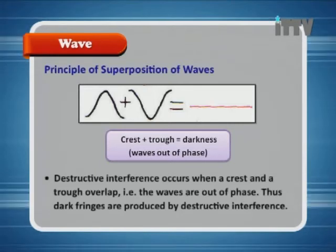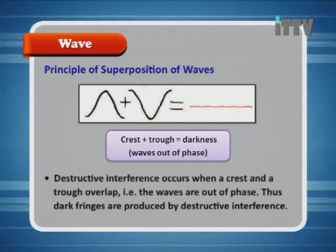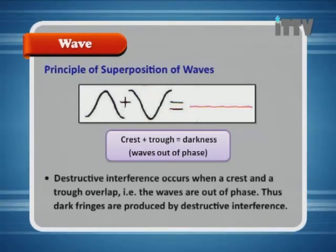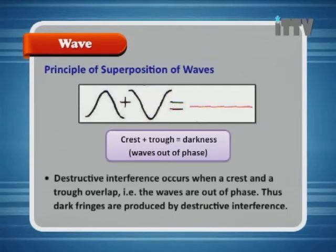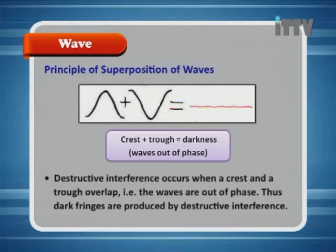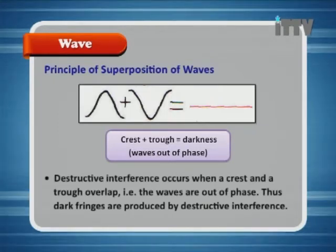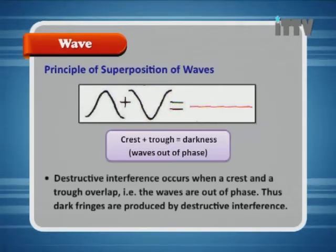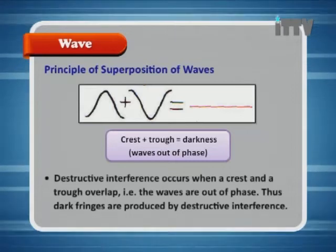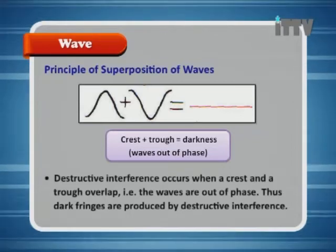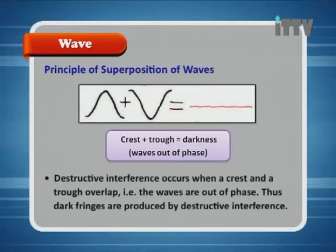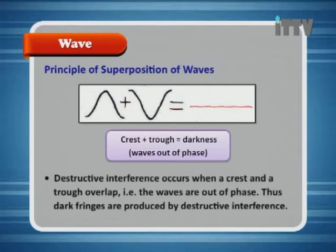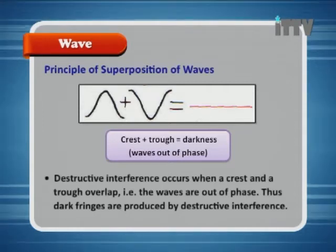When a crest and a trough meet, you get an area where there is almost no amplitude. This is represented by a dark fringe. Crest and trough equals darkness. Remember, the waves are out of phase.